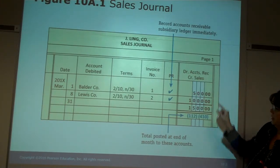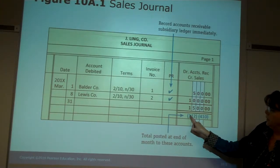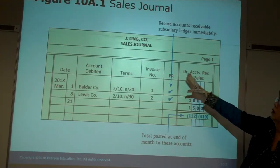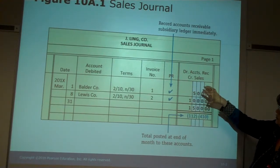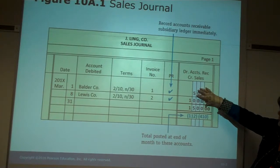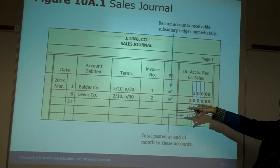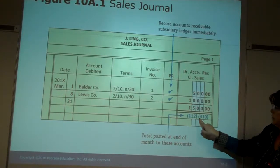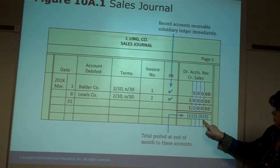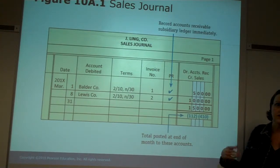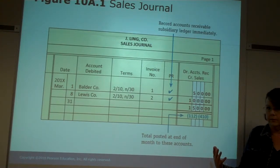We're going to post the total to accounts receivable and the total to sales — credit sales, debit accounts receivable. When we post the totals, it's all of the transactions listed for this particular month. This happened to be March. Then we list those account numbers at the bottom in parentheses to indicate that we posted.